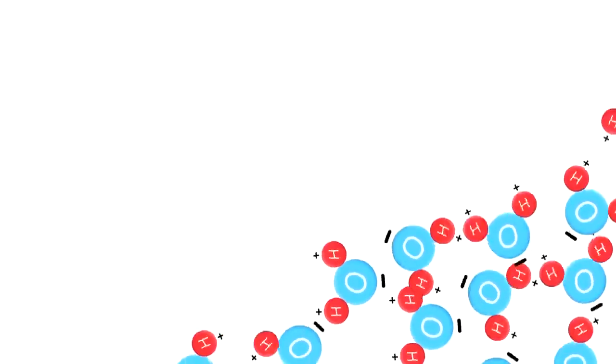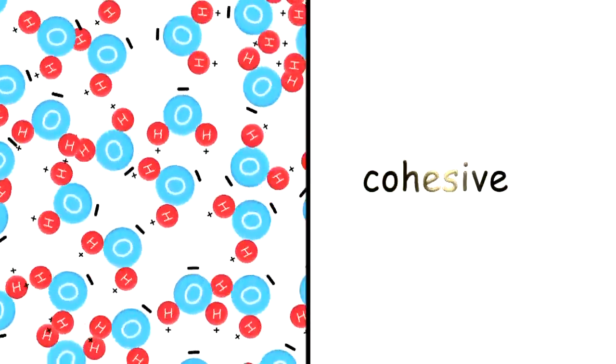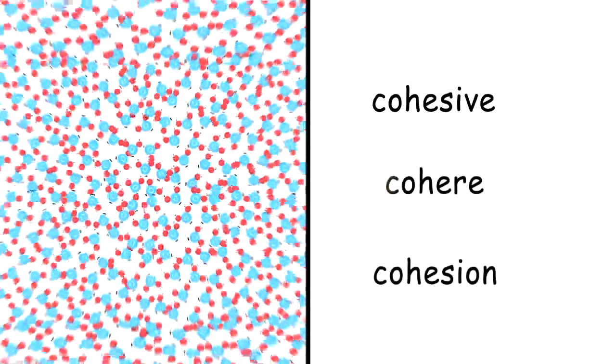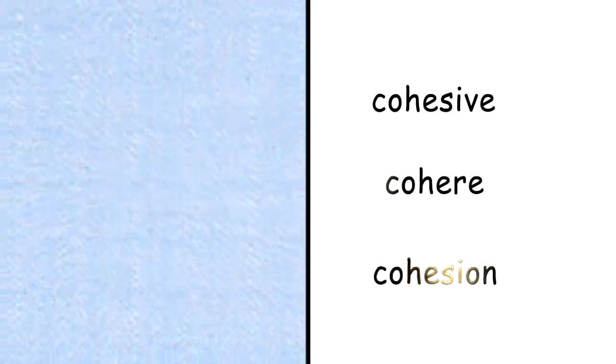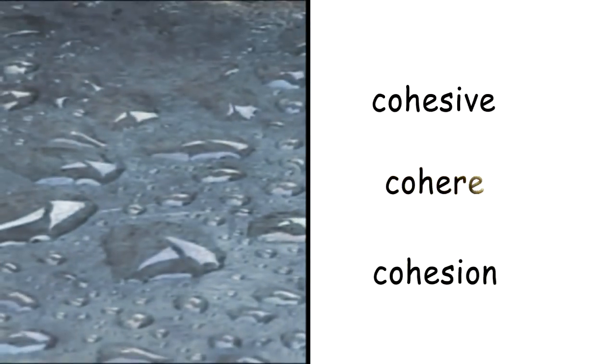Molecules that stay close to each other are called cohesive, and water is highly cohesive. Septillions, octillions of chaotically moving, tightly packed H2O molecules cohere to make a single raindrop.